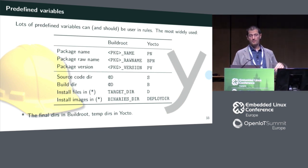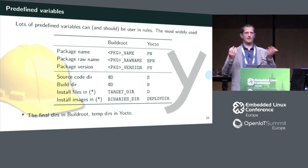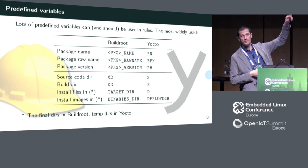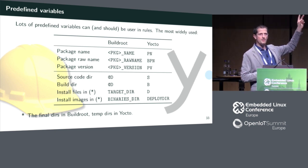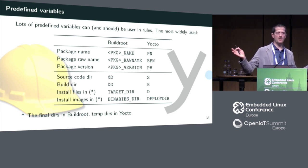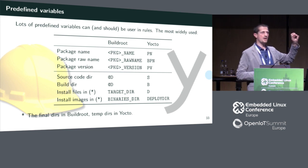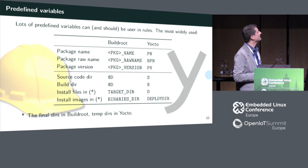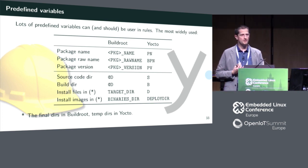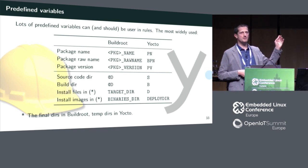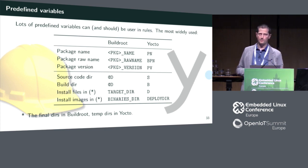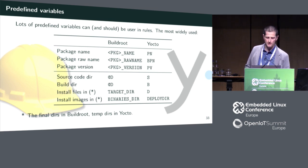Both tools have created several predefined variables for use in recipes. For example, PV is the package version in Yocto, and PACKAGENAME_VERSION is the same thing in Buildroot. Buildroot always prefixes variables with the package name because make uses a single global namespace. In Yocto, variables are assigned per recipe so no prefix is needed — it's more concise. There are also variables for the various directories you work in: source, build output, install, and install images.